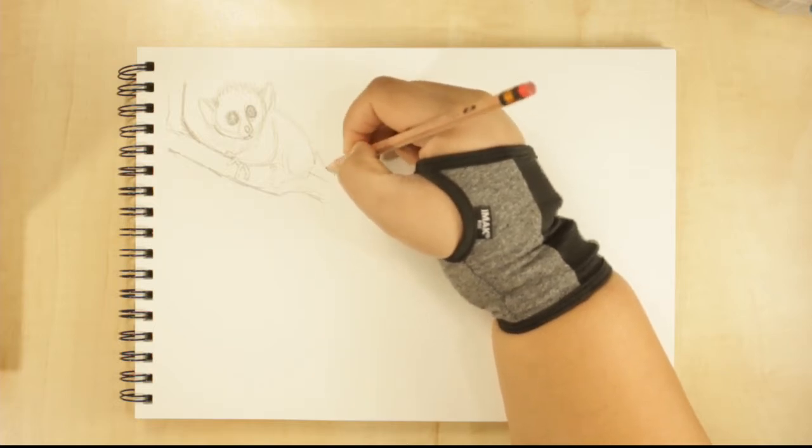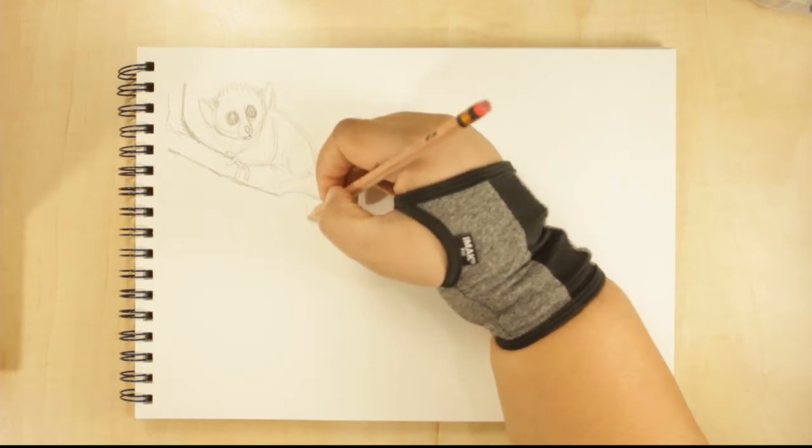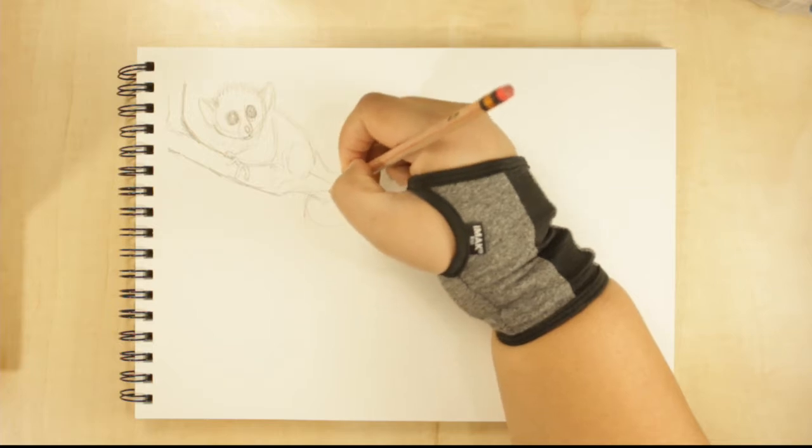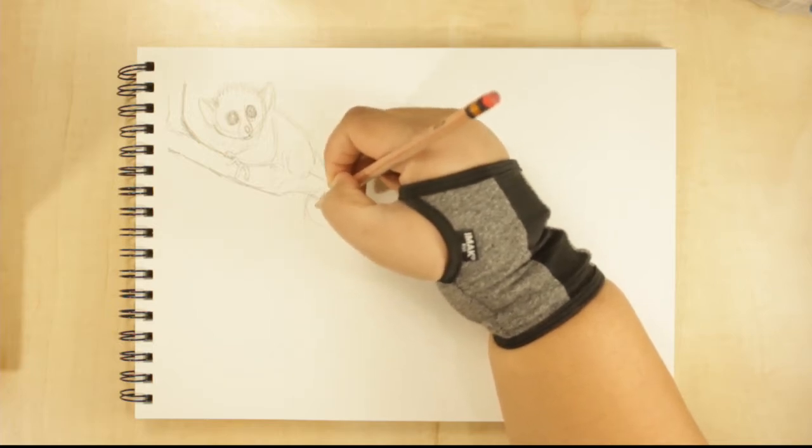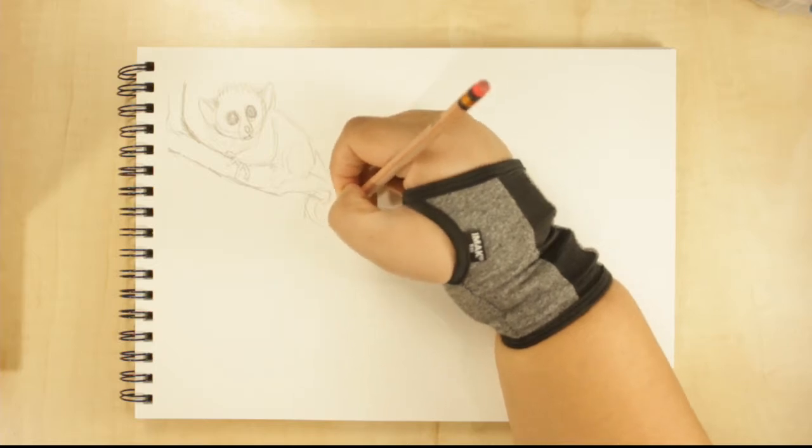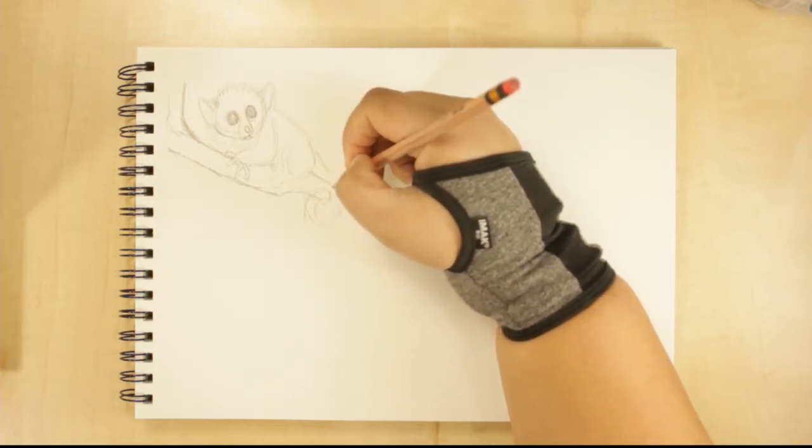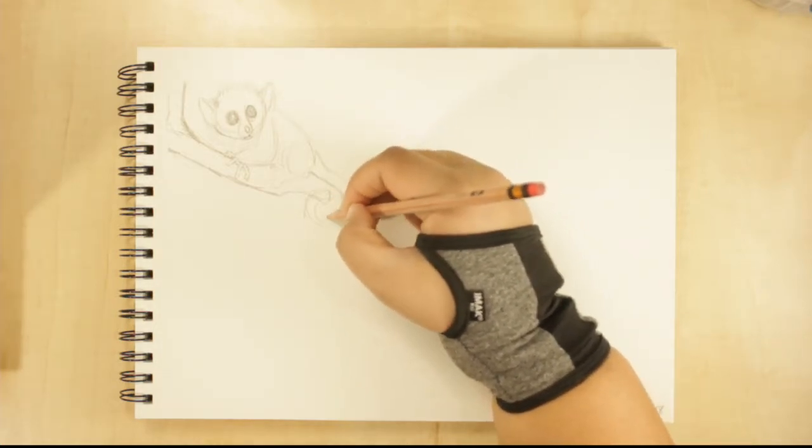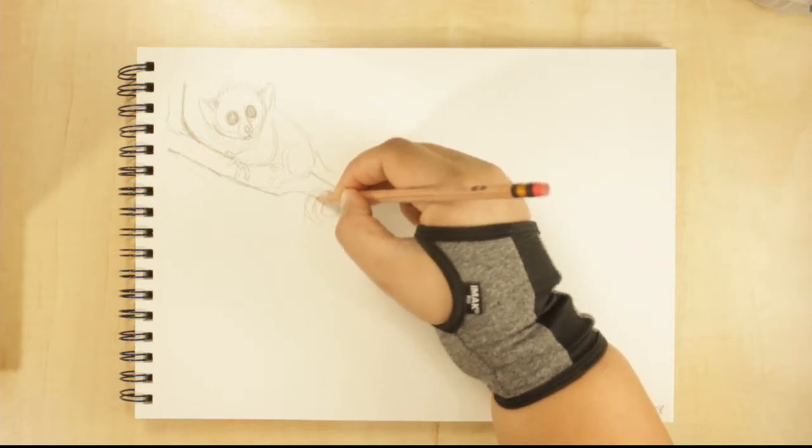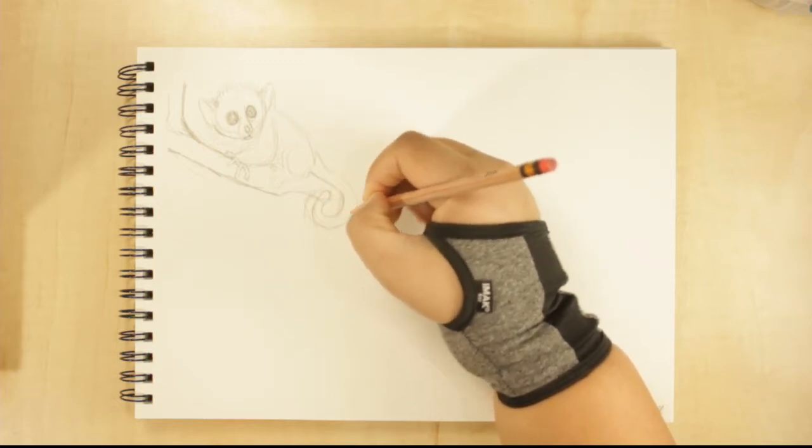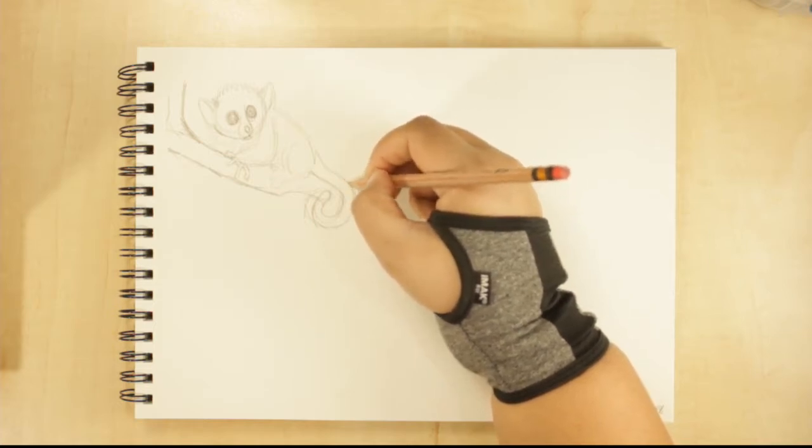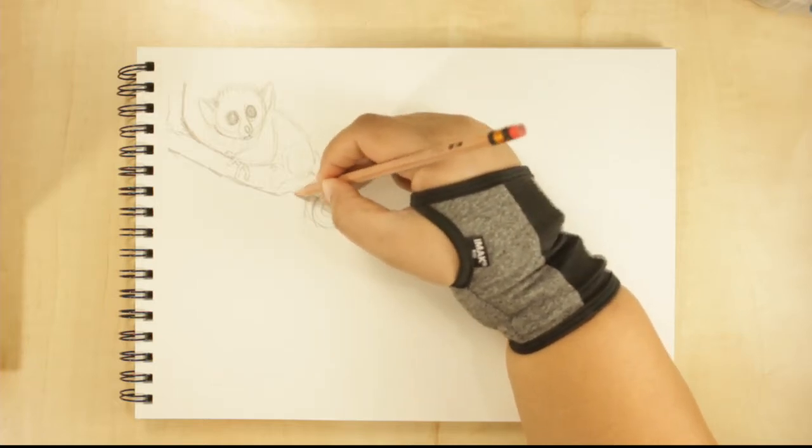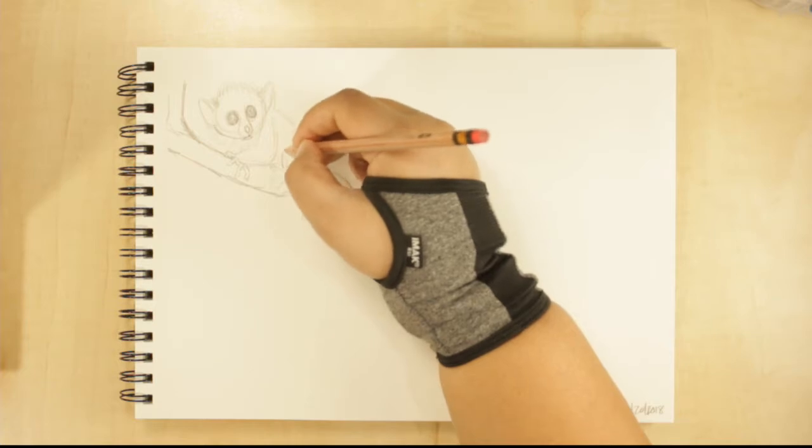This little tail curls down, this nice big floofy tail. Okay, let's get some more detail on this back leg.